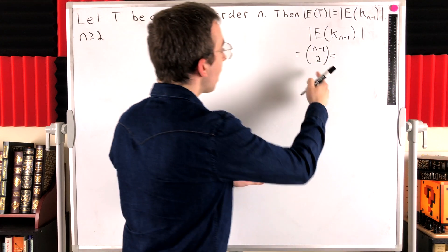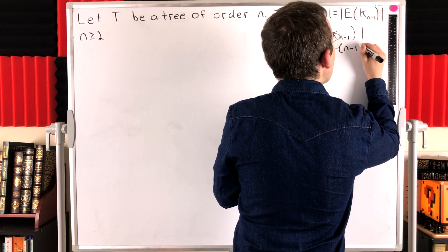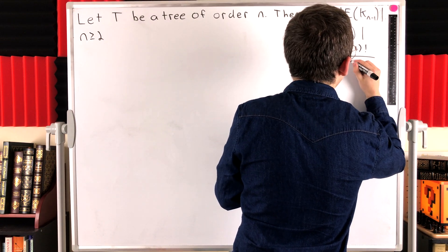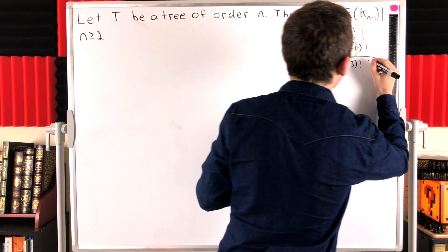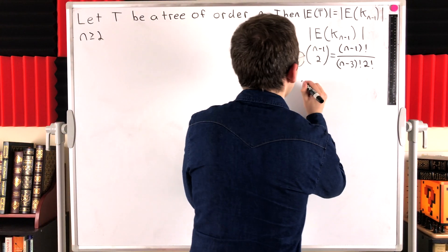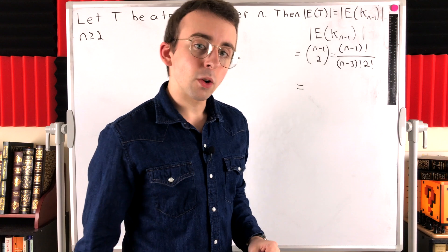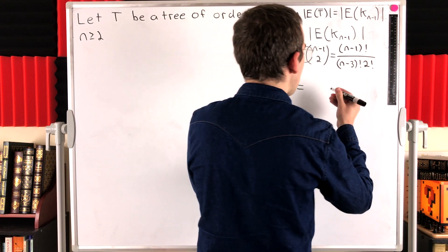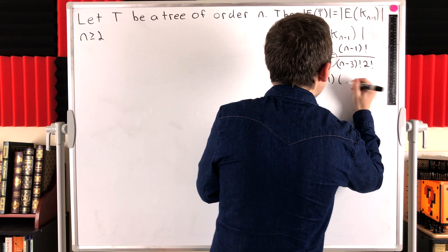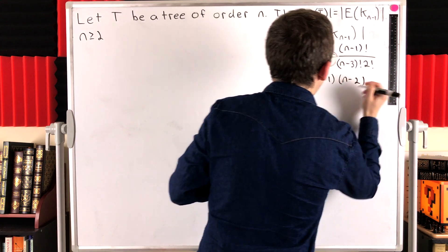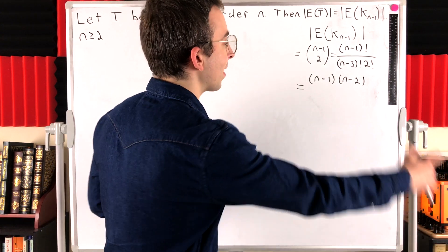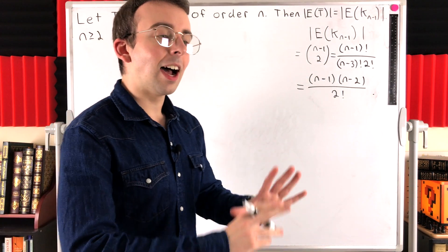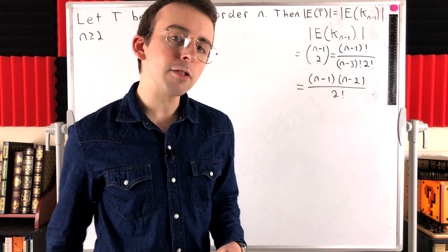Now, what is n minus one choose two equal to? This is a binomial coefficient that, by definition, is equal to n minus one factorial divided by n minus one minus two factorial — that's n minus three factorial — multiplied by two factorial. Now, n minus one factorial is equal to n minus one times n minus two times n minus three factorial. So we can cancel out the n minus three factorials, leaving n minus one times n minus two in the numerator, divided by two factorial.